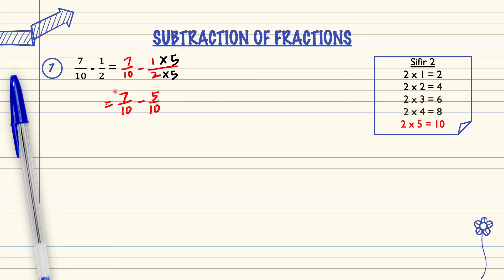So we can subtract the numerator: 7 minus 5 equals 2 over 10. 2 over 10 is the answer. But we can write 2 over 10 in simplest form.